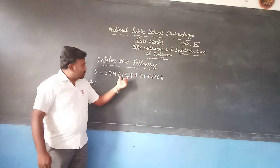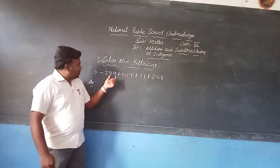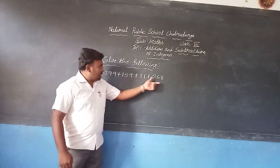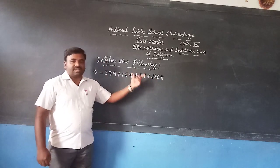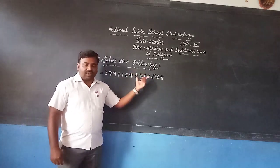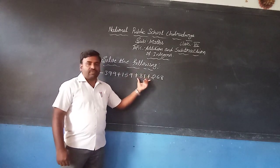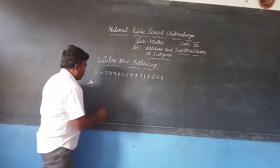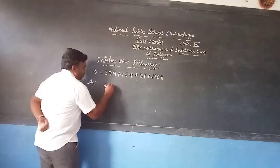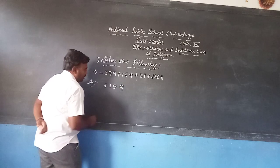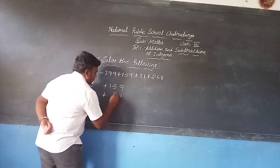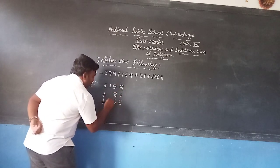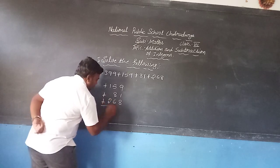Now use the rules here. We can see that 399 has the minus sign and the remaining three numbers have the plus sign — that is the same sign. So first we should find the sum of these three numbers: plus 159, plus 81, plus 268.